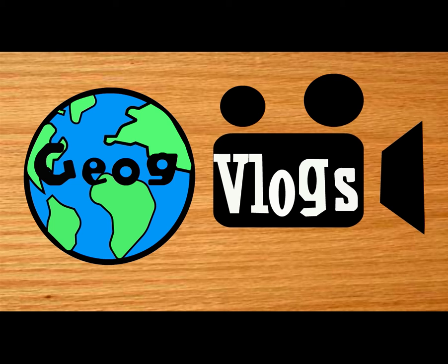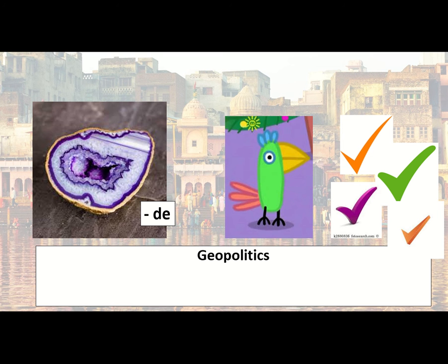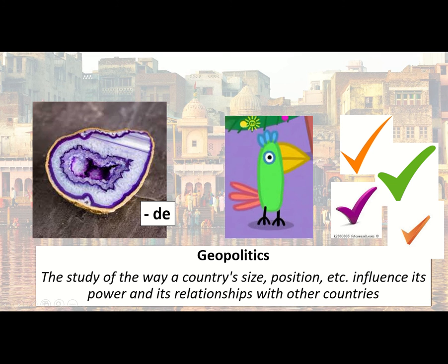Once you've got it, there's also a definition that you need to write down. Okay, so here's the first one. This one is the word geopolitics — that's a geode minus the 'de', that's Polly the parrot, and these are ticks. Geopolitics is the study of the way a country's size, position, etc. influence its power and its relationships with other countries. Geopolitics is quite a very interesting topic to actually be looking at — how countries interact with each other, all the political tensions that go on.